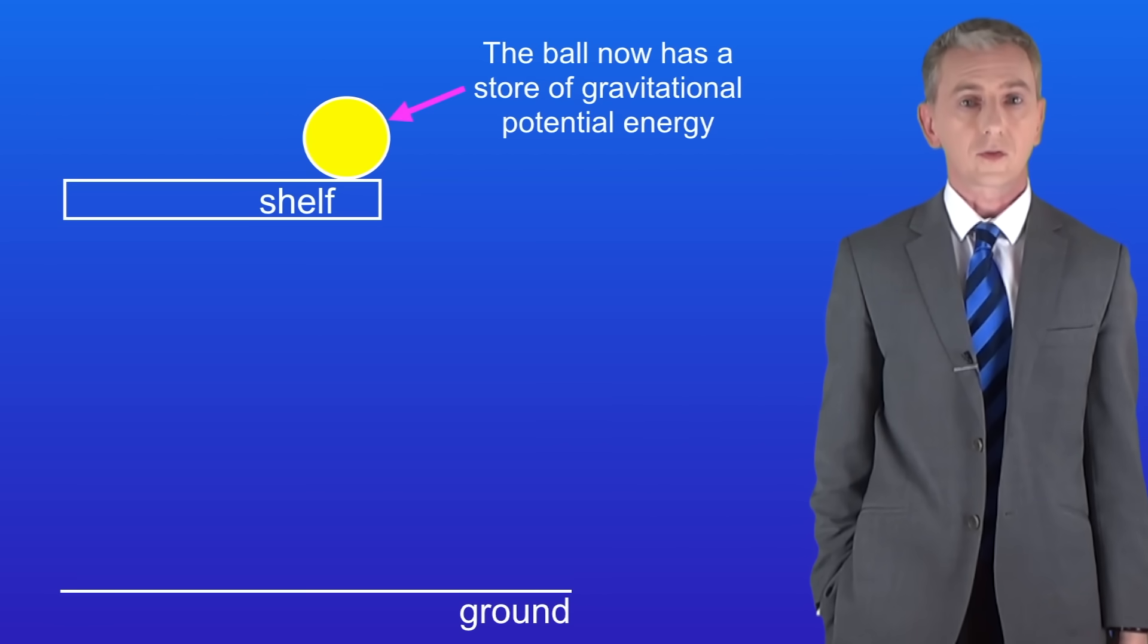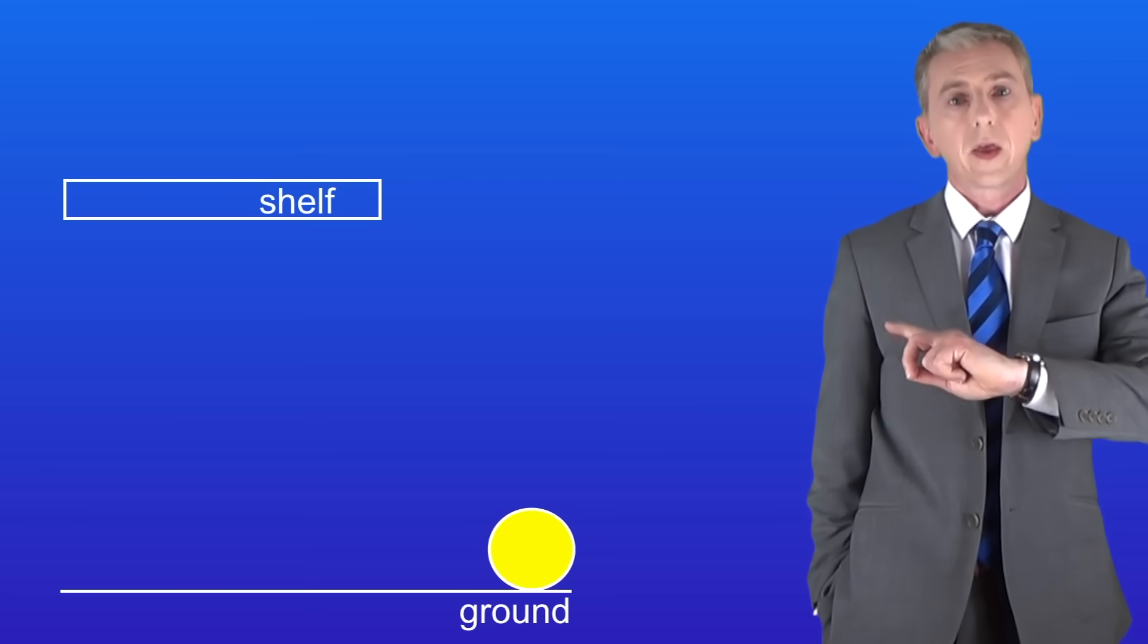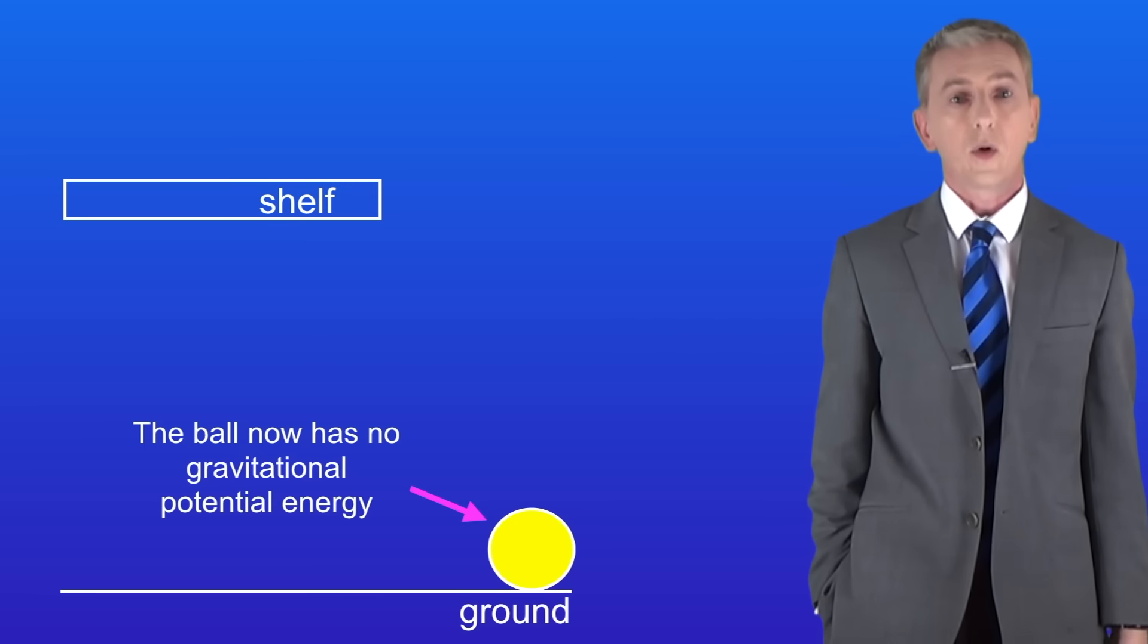If I now allow the ball to fall off the shelf back to the ground like this, then the store of gravitational potential energy is now changed to other forms of energy such as thermal energy and kinetic energy. So the ball now has no gravitational potential energy.